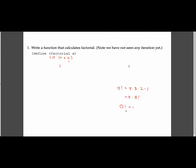Well, we're going to return x times a recursive call to factorial with x minus 1. So the way we can do that here is by saying multiply x times a recursive call to factorial with x minus 1.